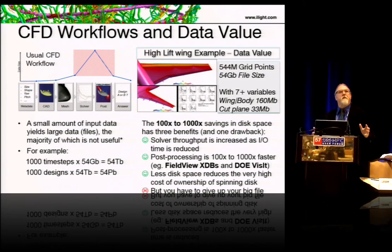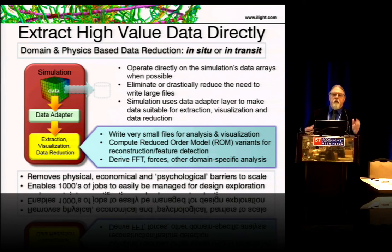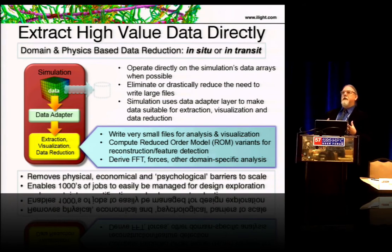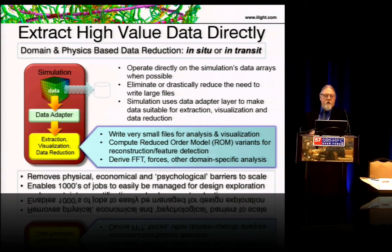You do have to give up your big file — that's the disruptive part. You extract the high-value data directly and do domain and physics-based data reduction directly on the HPC resource, operating on the data arrays in memory. You have two ways to do this: you can stop the solver and do post-processing right in the same memory space and write the extract, or use something called in-transit where you ship the data off to another set of nodes so the solver can continue. This is well-known in the Department of Energy — Oak Ridge has something called ADIOS that does this — but commercial ISVs are just not using it enough. The whole idea is to remove physical, economical, and psychological barriers to scaling by removing the disk problem.